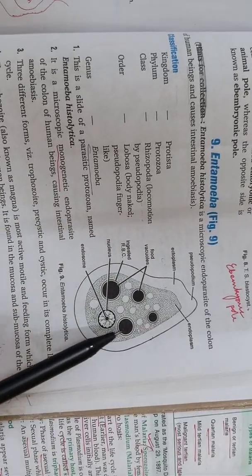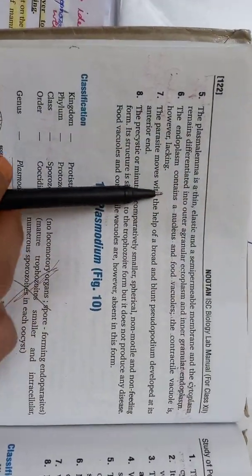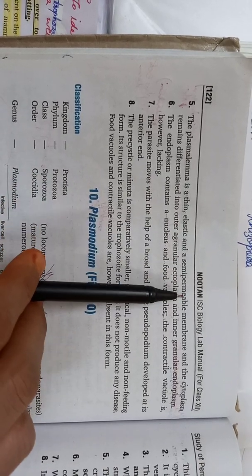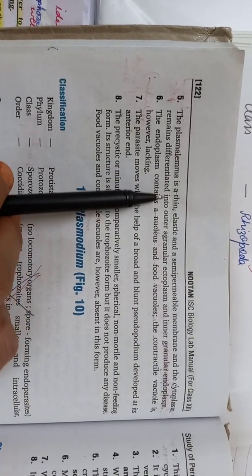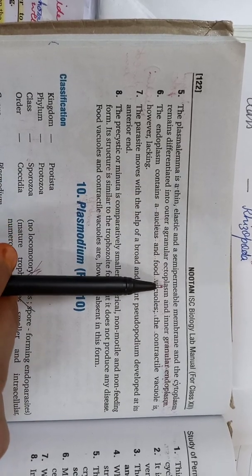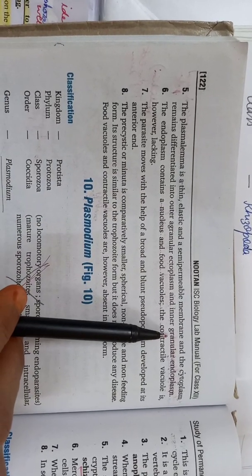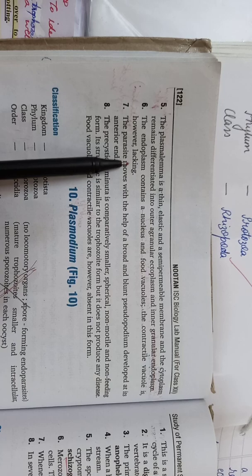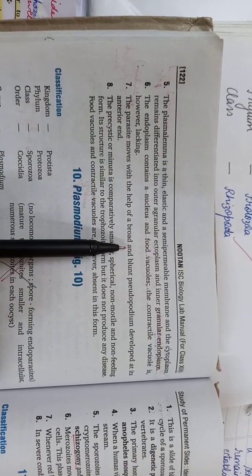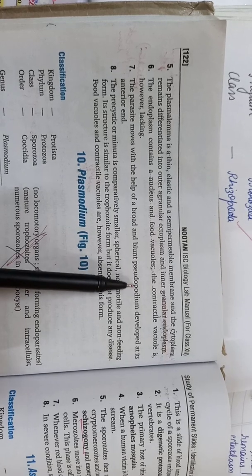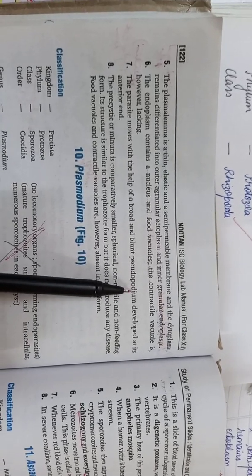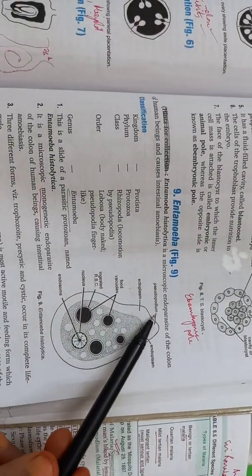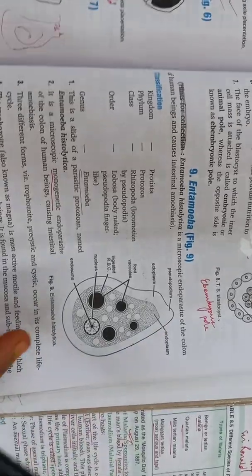Contractile vacuole cannot be seen children. As you can see there is no contractile vacuole at all. So, the plasma lemma is thin, elastic, semi-permeable and the cytoplasm remains differentiated into outer agranular ectoplasm and inner granular endoplasm. The endoplasm contains a nucleus and food vacuoles. Contractile vacuole however is lacking. The parasite moves with the help of broad and blunt pseudopodium, that means false feet. Pseudo means false, podia means feet, which is developed at the anterior end. So this is the pseudopodium, single blunt structure. And this helps in the movement of the organism.